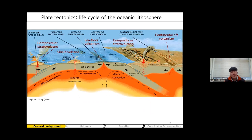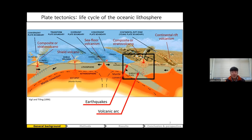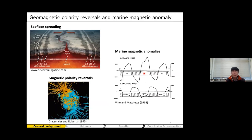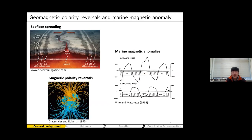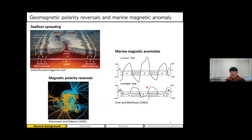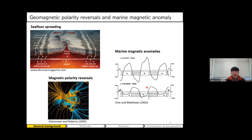Most people in this session may have heard about the life cycle of the oceanic lithosphere. The oceanic lithosphere starts its life with formation by seawater at the mid-ocean ridge. With many earthquakes and formation of volcanic arcs by the subduction process beneath the overriding plate, it finally ends its life.